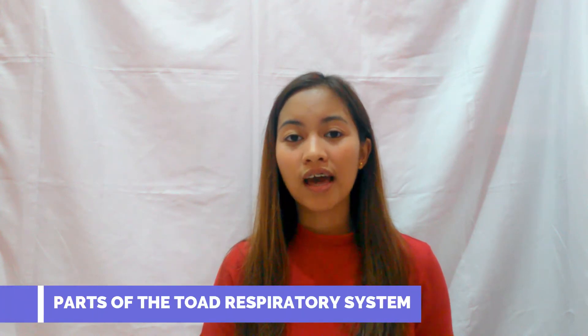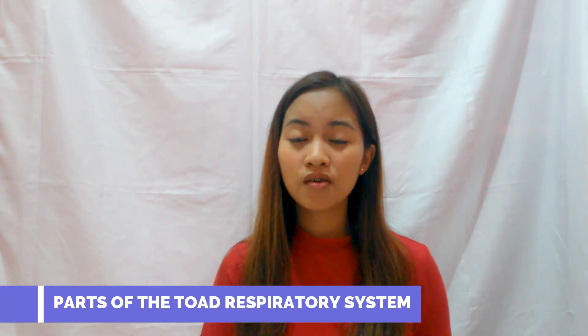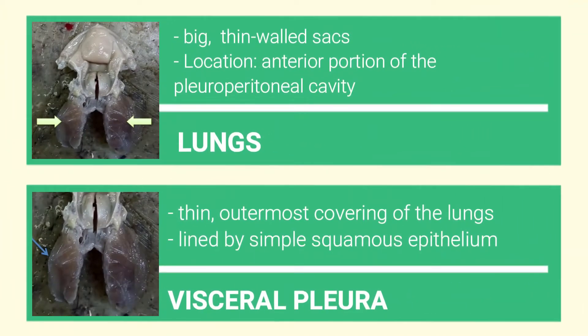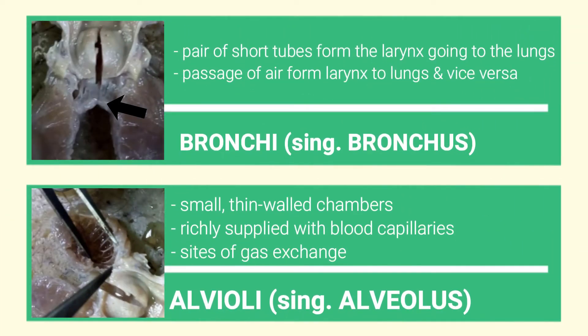The toad's respiratory tract is made up of the larynx, glottis, vocal cords, the lungs, visceral pleura, alveoli, and bronchi. The primary pulmonary respiratory organs are the lungs, which are thin-walled, spongy structures covered with a visceral pleura. It is connected with the assistance of the bronchus at the base of the laryngotracheal chamber. Its walls consist of air sacs called alveoli.